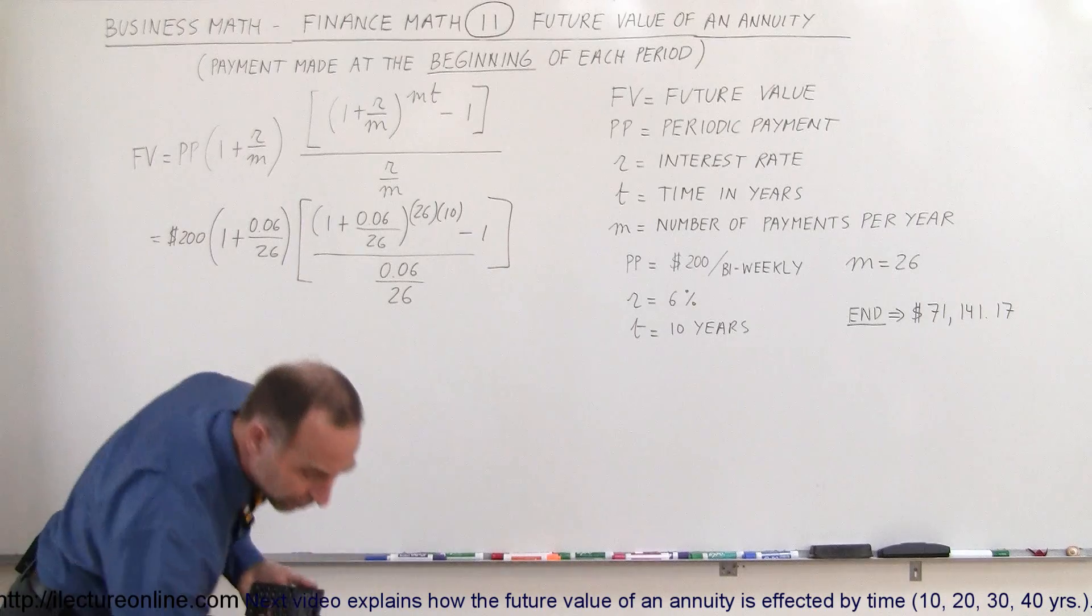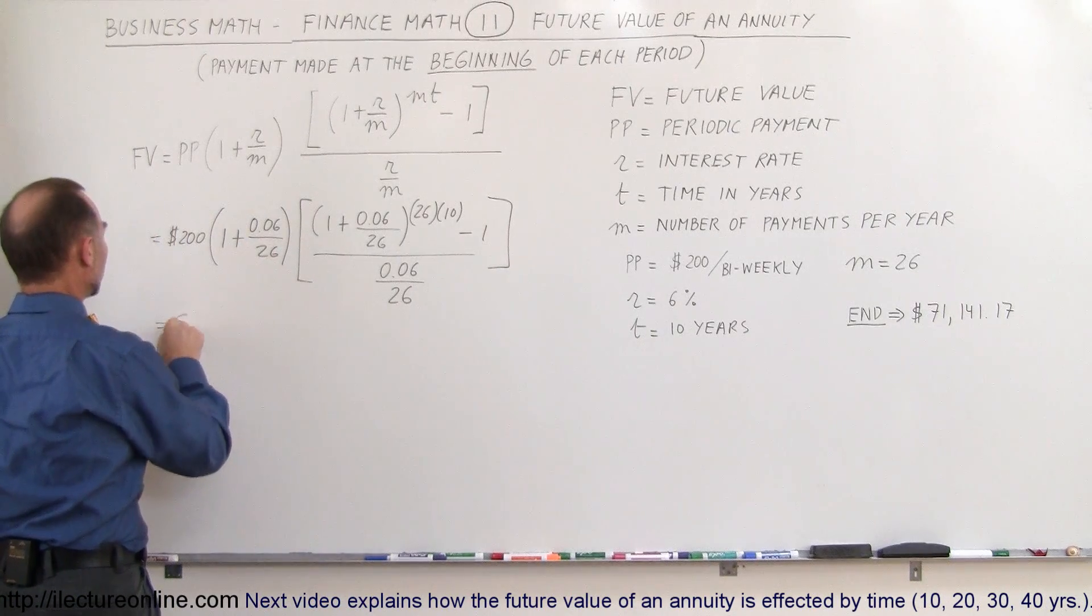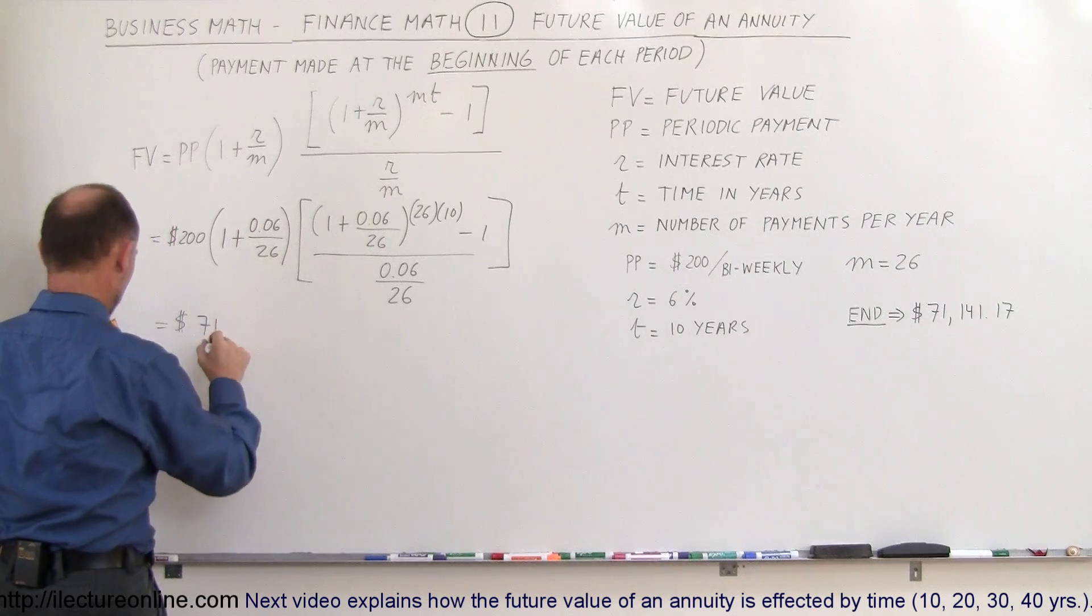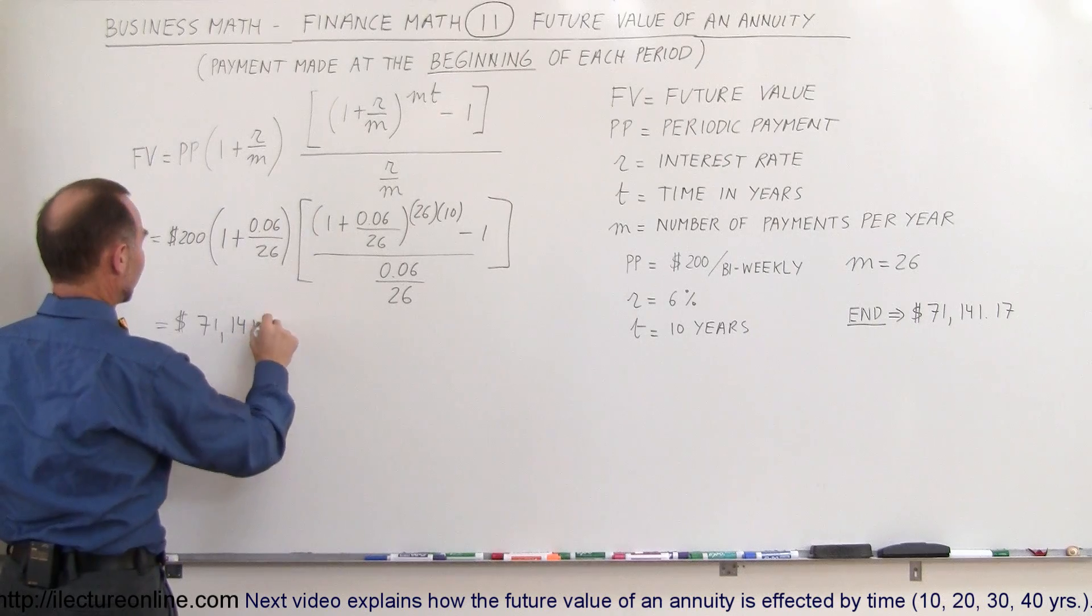And we get the following number, the same numbers we do there. So this is equal to $71,141.17.